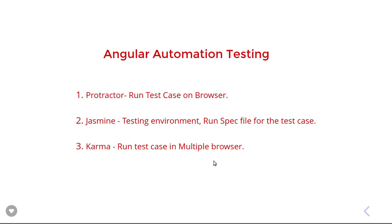In Angular automation testing, there are three important things that help us write test cases. First, Protractor — it runs our test cases on the browser. Second, Jasmine — this is basically the testing environment where we write the code inside spec files, which are denoted with the .spec extension. Third, Karma — Karma works with Protractor and runs the test cases on multiple browsers, sometimes in parallel across multiple browsers.